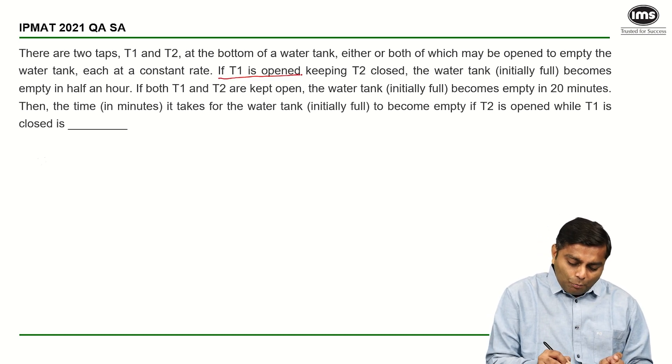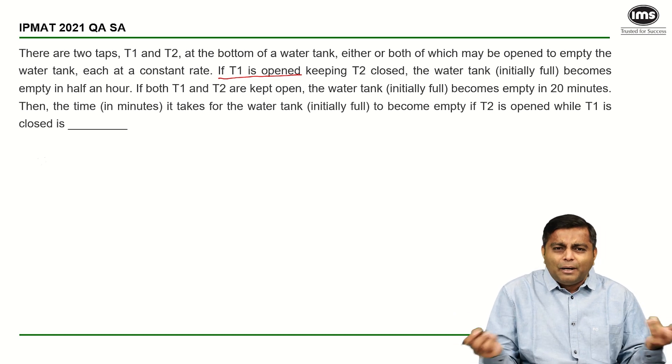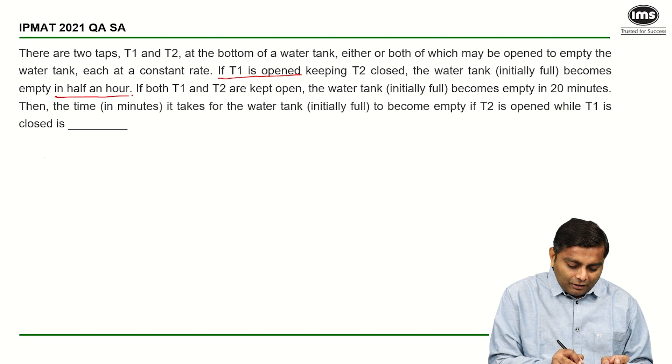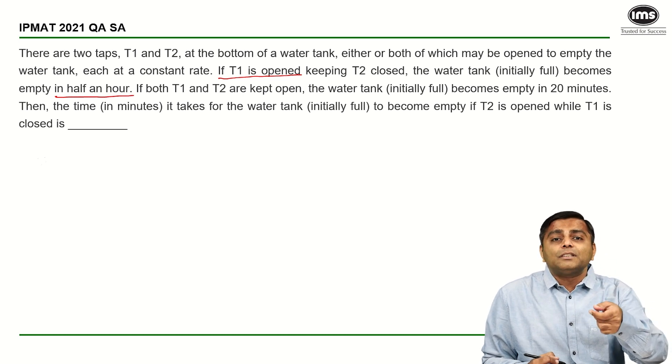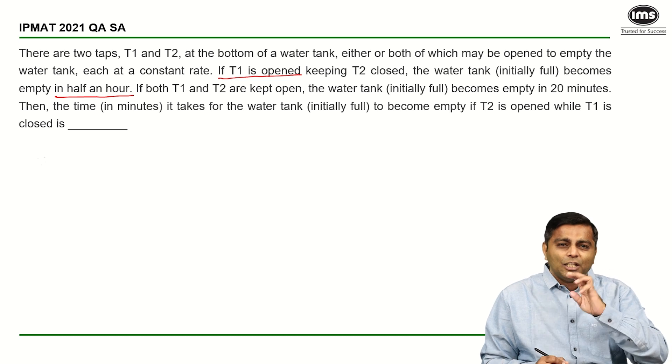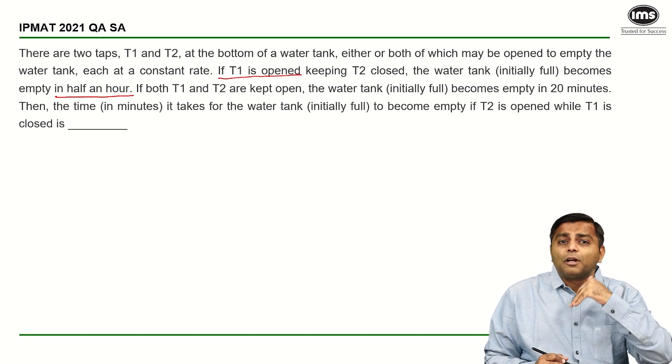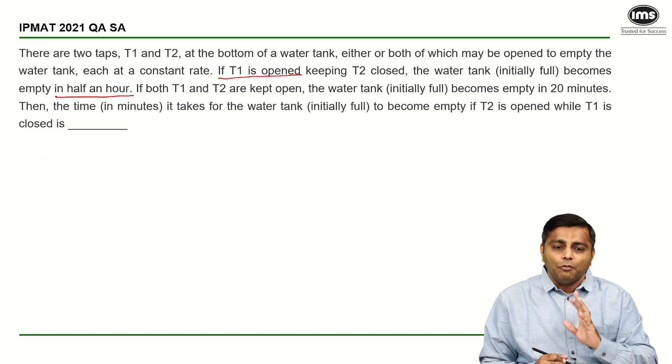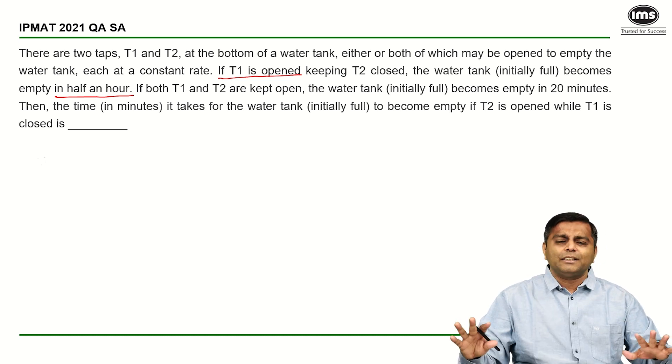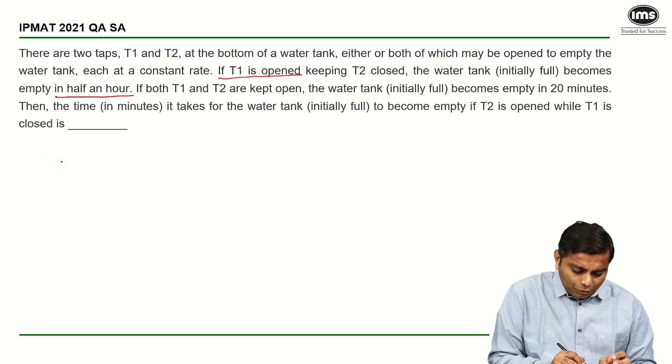The first part says if T1 is opened and T2 is closed, so T2 doesn't matter, it's not in the picture. The water tank which is full becomes empty in half an hour. The only thing tricky about this is they've used words instead of numbers. Basically they have said T1 empties the tank in half an hour, so I am going to write T1 empties the tank in 30 minutes.